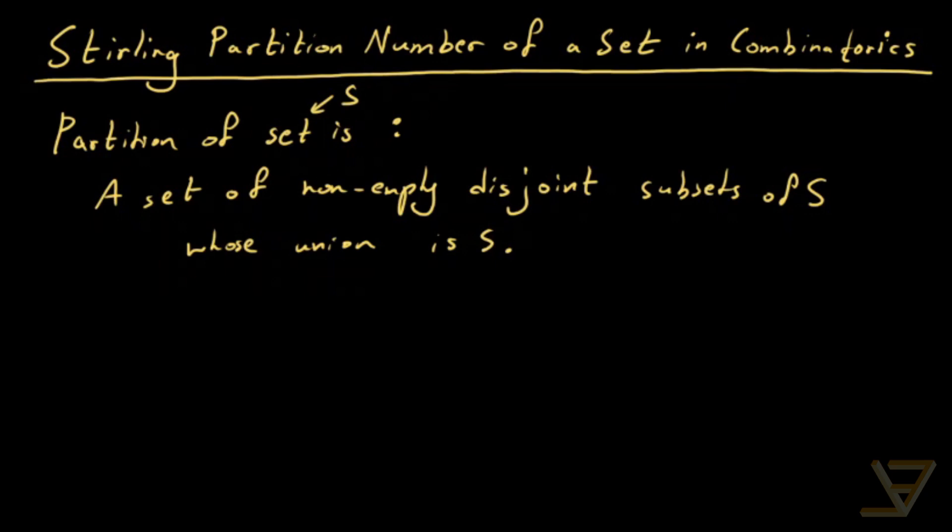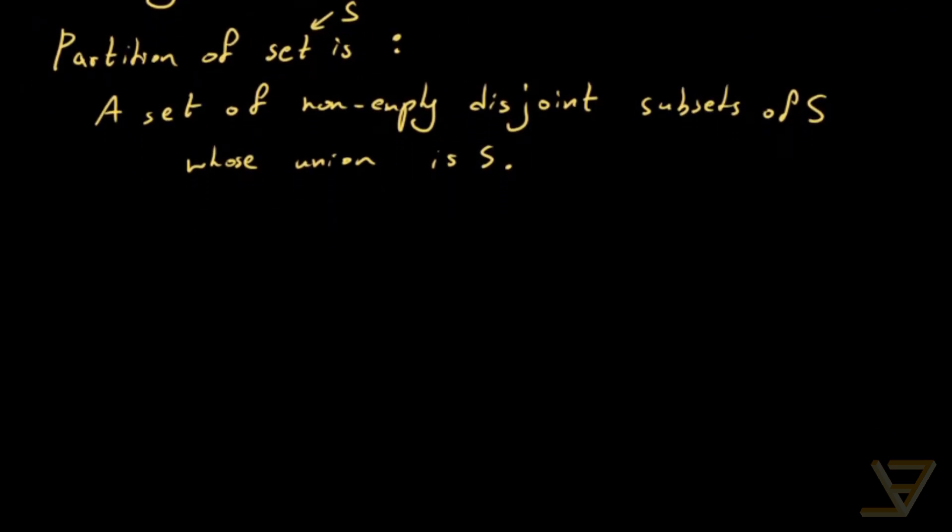So I'm going to give you an example because it's a bit of a mouthful to swallow here. First of all, let's look at the set ABC. So we're going to let that be S. That's going to be the example in which we'll find all the possible partitions.